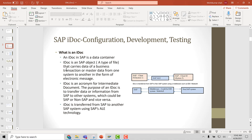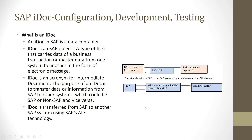Here is a diagram which shows you have an SAP client or system one, and this system wants to send information to another SAP client, which is system two. You will use an IDOC to send the information. IDOC is a box, a container which will contain all the information.